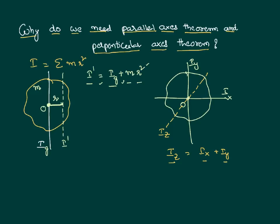So the parallel axis theorem and perpendicular axis theorem make the calculation of moment of inertia easy. If we do not have these theorems, every time we would have to go through the integration process, which is a lengthy process. That is why the parallel axis theorem and perpendicular axis theorem are always of great help.